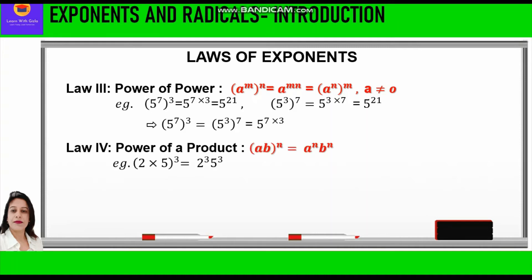The fourth law of exponents is power of a product. It says a into b, raised to power n, is equal to a raised to power n into b raised to power n. For example, if we have 2 into 5, raised to power 3, we can write 2 raised to power 3 into 5 raised to power 3. That is, 3 is distributed between 2 and 5.